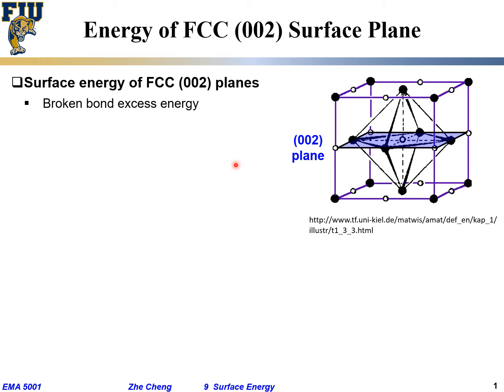And we make the same assumptions. Broken bond excess energy per atom is still half of bonding strength. Because a bond typically connects two atoms, and when you break the bond, the energy for each atom is raised by half of the bonding strength. And then we are looking at FCC crystal structure.